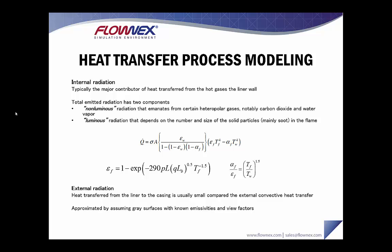Internal radiation from the hot combustion gases is typically a major contributor of heat transfer from the hot gas to the liner wall. Total emitted radiation typically has two components, both of which can be implemented in Flownex: non-luminous radiation that emanates from heteropolar gases, notably carbon dioxide and water vapor, and luminous radiation that depends on the number and size of solid particles, mainly soot, in the flame. External radiation refers to heat transfer from the liner to the casing. It is usually small compared to external convection heat transfer and is approximated by assuming grey surfaces with known emissivities and view factors.